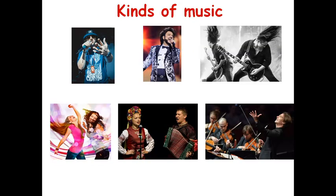At first, let's meet with some kinds of music, with their names. Сначала давайте познакомимся с названиями видов музыки. Какие виды музыки вы знаете? Рэп, поп-музыка, рок, танцевальная музыка, народная и классическая. Let's learn the names of kinds of music in English. Давайте выучим названия видов музыки на английском языке. Look at the screen, listen and repeat after me, all together.